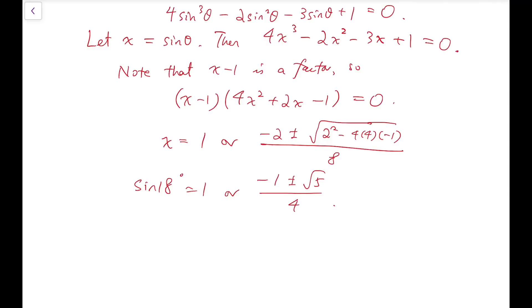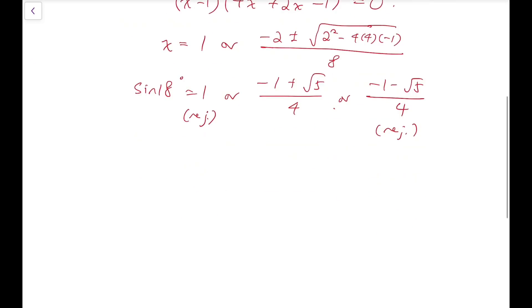Now it just remains to cancel out some of the possible values. Well it can't be 1 because sine 18 is just not 1. Only sine 90 or added by a multiple of 2π or 360 degrees is 1. So reject. And of course sine 18 degrees is positive, so it cannot be minus 1 minus root 5 over 4. So I reject the negative case. And so now I know that sine of 18 degrees equals minus 1 plus root 5 over 4.